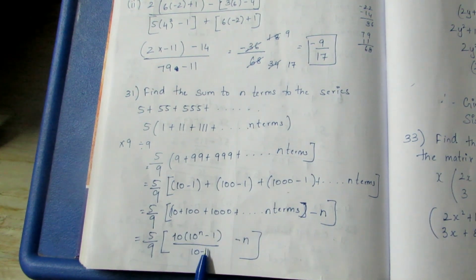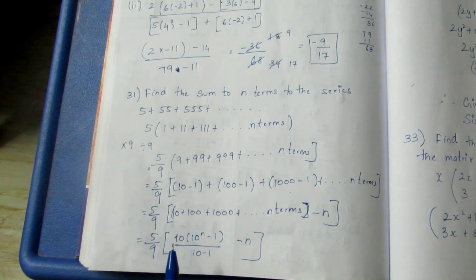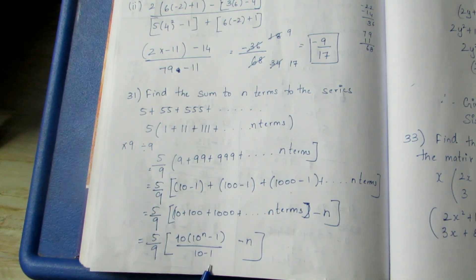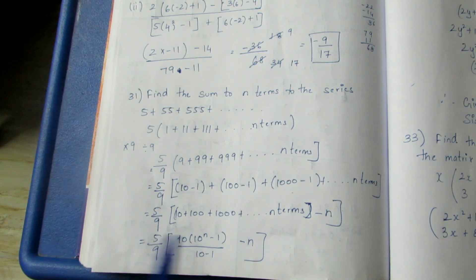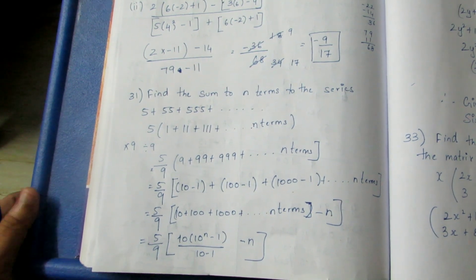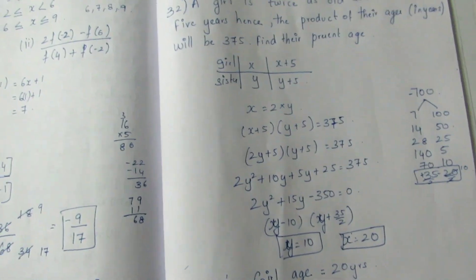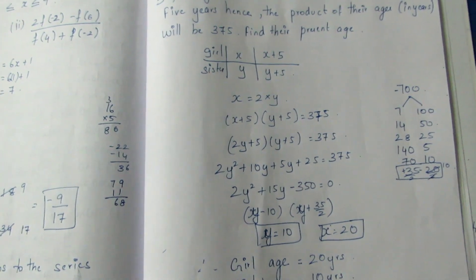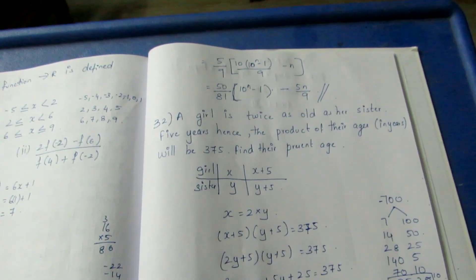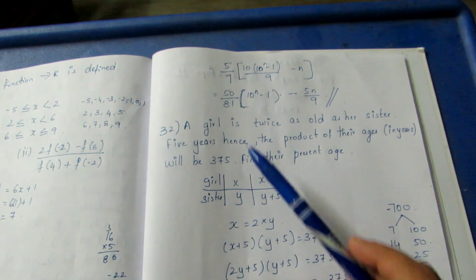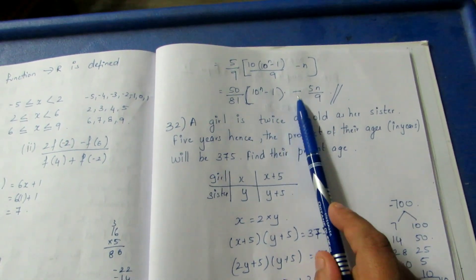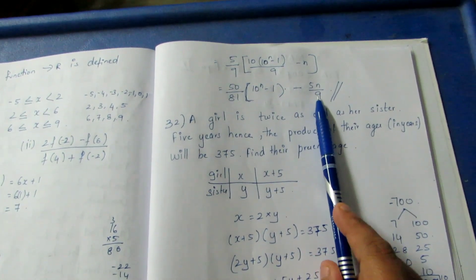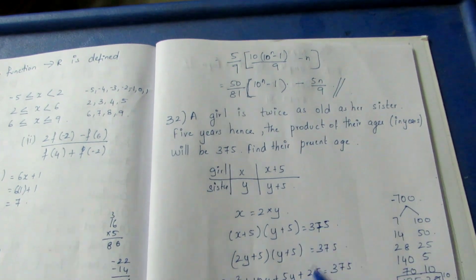Using the GP formula: a × (r^n - 1) / (r - 1), we substitute. With 5 by 9 up to n terms, we arrive at the final answer.